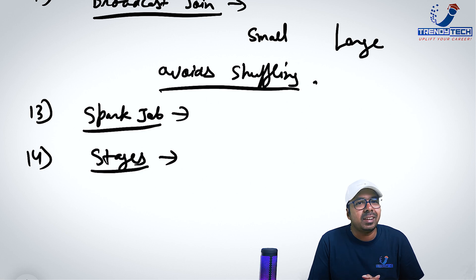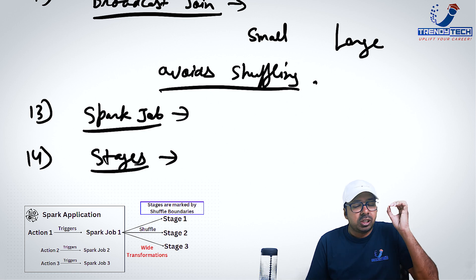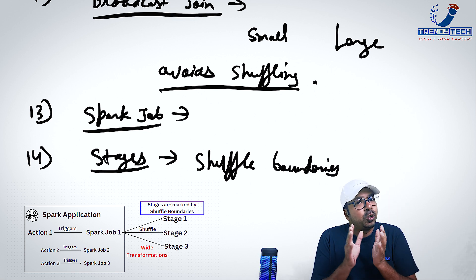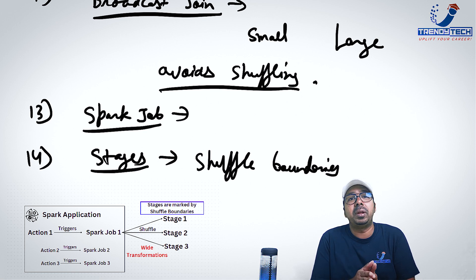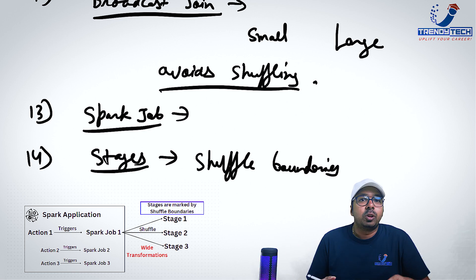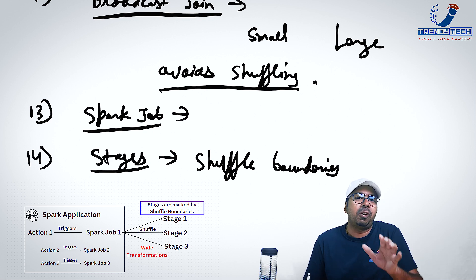Next is what is stages in a spark job? Now once you see the spark job in a spark UI, you will see stages. Ideally, I would say whenever you call a wide transformation like group by join, a new stage is created. So stages are marked by shuffle boundaries. Shuffle boundaries. So stages are marked by shuffle boundaries. If you have two wide transformations, there will be three stages. If you have five wide transformations, there will be six stages and so on. So if you see a lot of stages, that means you have a lot of wide transformations and there is a lot of shuffling of data which is involved.